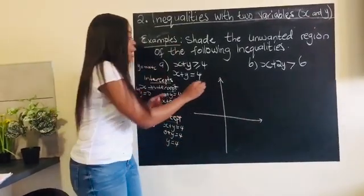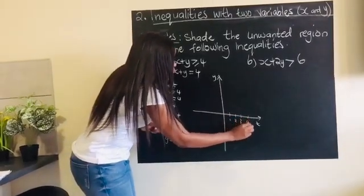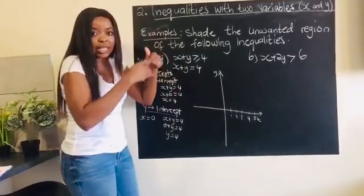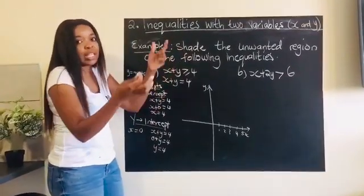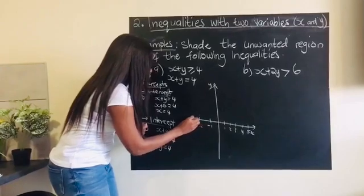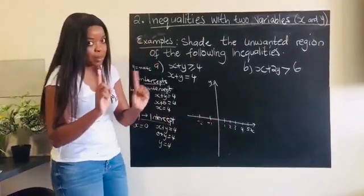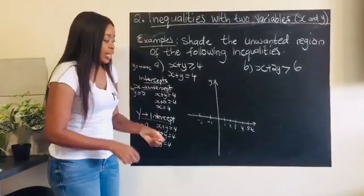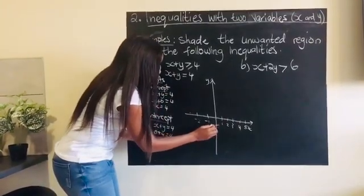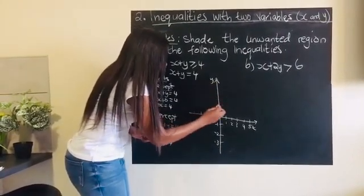I'm now going to draw my graph. I can label one, two, three, four — but I want to include at least a couple more numbers beyond that, so I have space to decide on my wanted and unwanted region. I also need values on the negative side. Remember: your scale should be the same. You can't make one centimeter from zero to one and then two centimeters from zero to negative one. The space between points must be consistent.